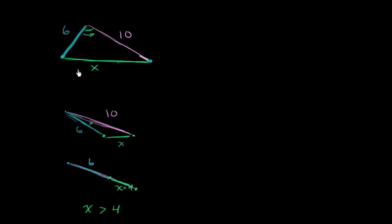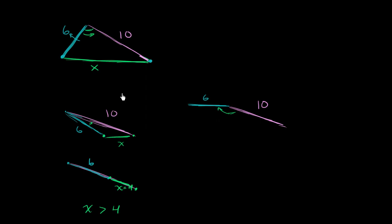Now let's think about it the other way — how large can x be? To think about larger and larger x's, we need to make this angle bigger. So let's draw the 10 side again, and I'm going to make that angle bigger and bigger. It's approaching 180 degrees. At 180 degrees, our triangle will once again be turned into a line segment — it will become a degenerate triangle.